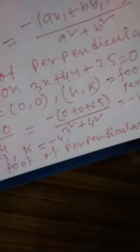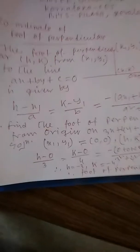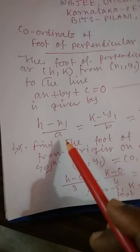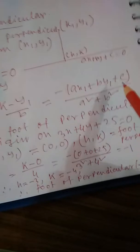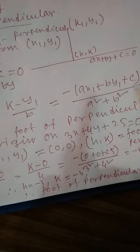Therefore, the foot of perpendicular is (−3, −4). Very easily you can find this without the Traditional Method — just applying the shortcut formula: (H − X₁)/A = (K − Y₁)/B = −(AX₁ + BY₁ + C)/(A² + B²).